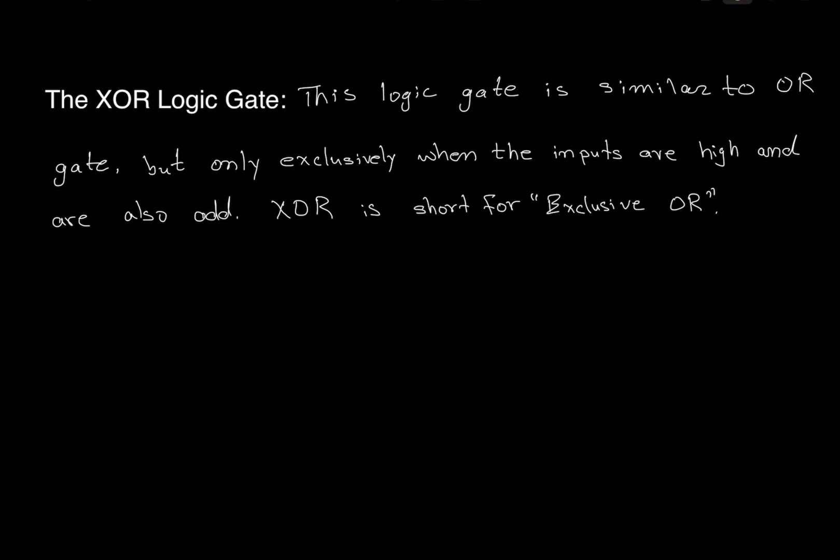The exclusive condition for the XOR gate is that the output will only be on if you have an odd number of inputs high. XOR is often shortened for 'Exclusive OR gate' — that's how we say XOR: Exclusive OR.